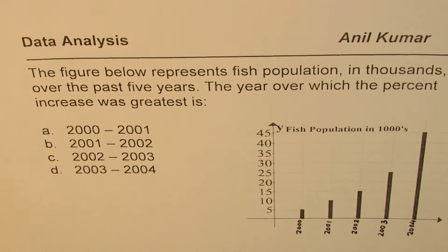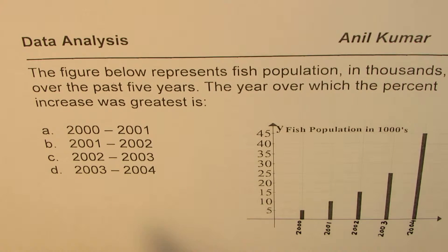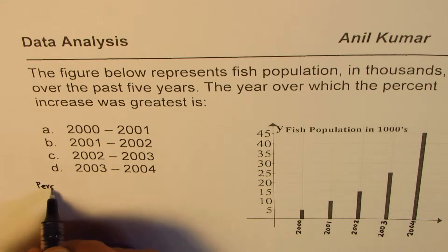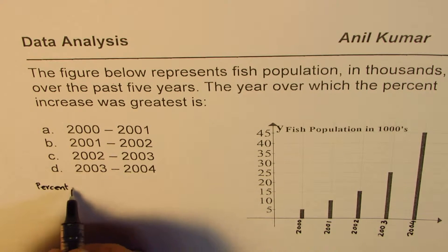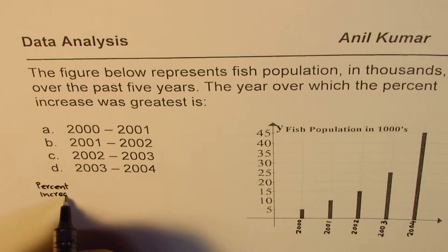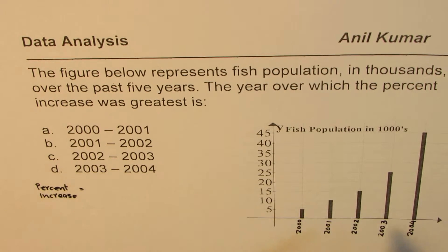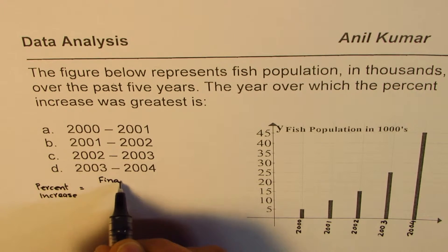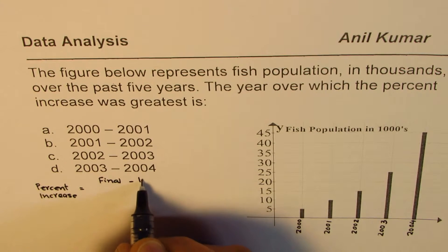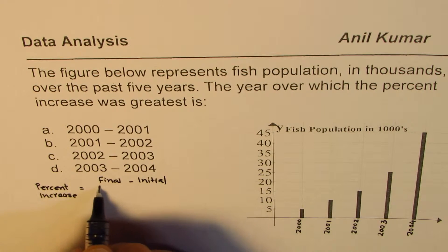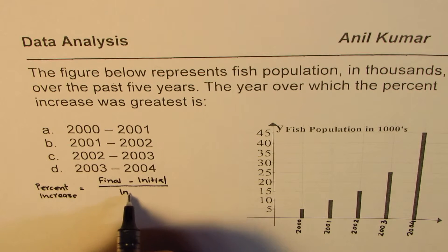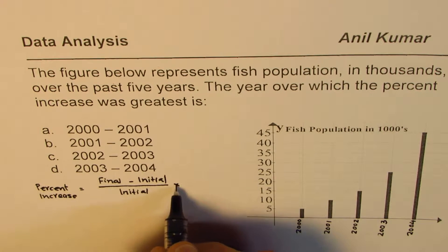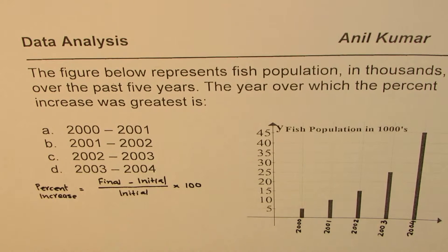Now let us try to understand what percent increase is — this is very important. To find percent increase, we take the final value minus the initial value, divided by the initial value, and then multiplied by 100. That is the percent increase. Keep that in mind.